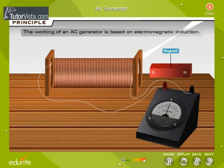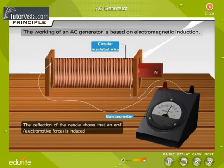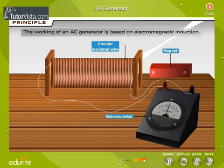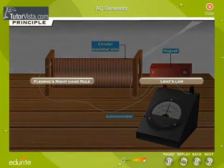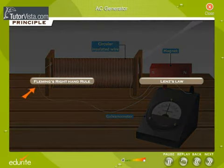The working of an AC generator is based on electromagnetic induction. That is, whenever the flux passing through a circuit changes, an EMF is induced in it and a current begins to flow. The direction of induced EMF is given by Fleming's right-hand rule or Lenz's law.